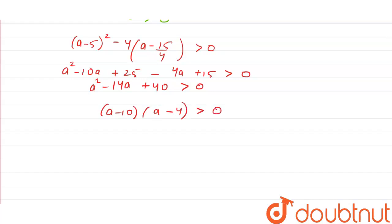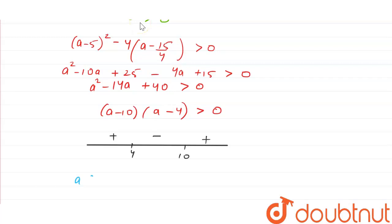We will draw the regions on the number line. We have two roots, 10 and 4. On the number line we have 4 and 10. The sign regions are plus, minus, plus, and we need greater than 0, so we need positive solutions. Therefore A belongs to minus infinity to 4, union 10 to infinity.